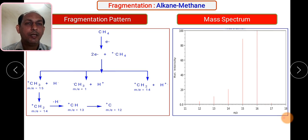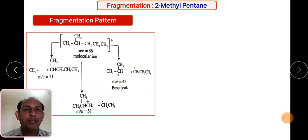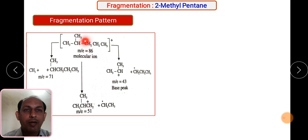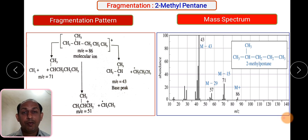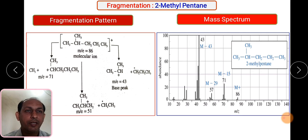In case of 2-methylpentane, this is a branched compound with carbon numbered 2, 3, 4, 5. The molecular ion peak appears at 86. Then fragmentation gives 71, then 43, and 51. In the mass spectrum, 86 has lesser intensity. The peak at 43 has the highest intensity — this is the base peak — because the fragment at 43 corresponds to a tertiary carbocation, which is more stable than secondary or primary carbocations due to the inductive effect. So 43 is the base peak for 2-methylpentane.